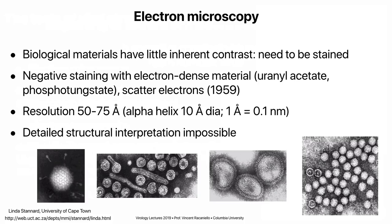Here are hepatitis B virus particles, an influenza virus particle, and some polioviruses — you can see a roughly spherical shape. Some look empty because they're broken, which is part of the reason the particle-to-PFU ratio is high — you have a lot of broken particles. The resolution of EM is not high, about 50 to 75 angstroms. An alpha helix is 10 angstroms, so you cannot see alpha helices with negative stain EM. You only get an overview of what a virus particle looks like, which is important but you cannot get detailed structure.